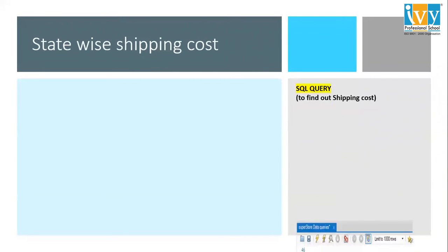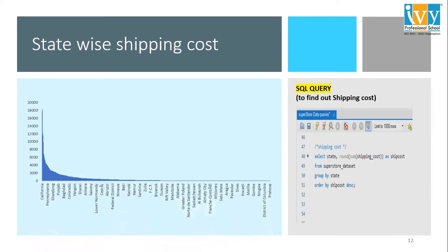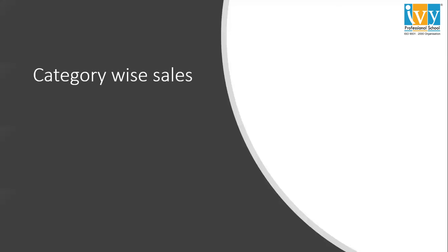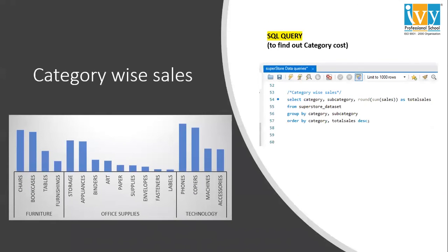For state-wise shipping cost, the SQL query requires us to sum the shipping cost and find it for each state. The graphical representation shows the highest shipping cost is from California and the lowest is from Nelson. Moving forward to category-wise sales, we group by category and subcategory, doing a sum of sales. The graphical representation covers each category — furniture, office supplies, and technology — with numbers for each subcategory as well.